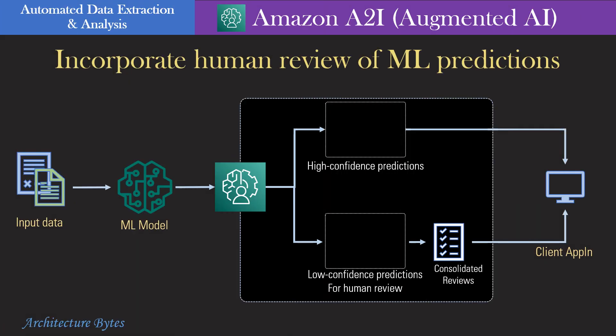With Amazon A2I, you can add human judgments to AI predictions. For example, you could send high confidence predictions for further processing while low confidence ones go for human review. You could use pre-built workflows and retrain models to improve outcomes over time.